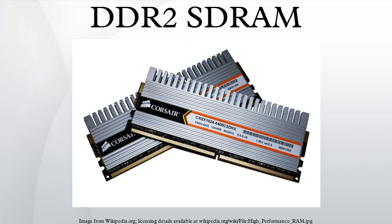DDR2-XXX denotes data transfer rate and describes raw DDR chips, whereas PC2-XXX denotes theoretical bandwidth and is used to describe assembled DIMMs. Bandwidth is calculated by taking transfers per second and multiplying by 8, because DDR2 memory modules transfer data on a bus that is 64 data bits wide, and since a byte comprises 8 bits, this equates to 8 bytes of data per transfer.